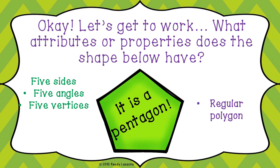I'll give you an example. What attributes or properties does the shape below have? It has five sides, five angles, and five vertices, and it is considered a regular polygon. The name of the shape is pentagon.